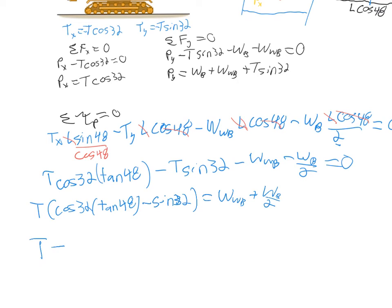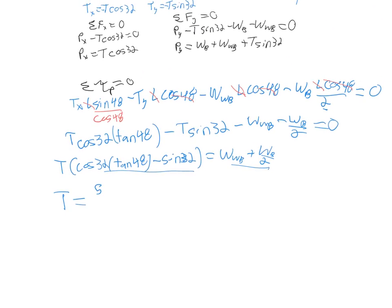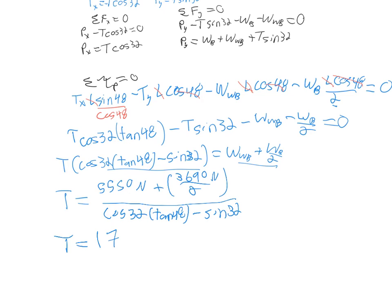And so now our T, our tension, is just going to be equal to this side over this whole thing. So we have the weight of the wrecking ball, which was 5,550 newtons plus the weight of the boom, which was 3,690 newtons over 2. And all of that is being divided by cosine 32 times the tangent of 48 and then minus the sine of 32. So you plug and chug, do the math. And after a lot of fun work in algebra, we find that the tension should come out to be equal to approximately 17,950 newtons or approximately 18,000 newtons.